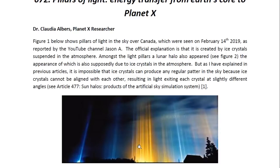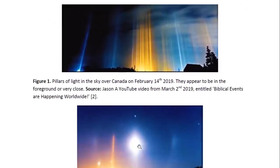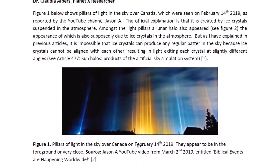Figure one below shows pillars of light in the sky over Canada, which were seen on February 14th, 2019, as reported by the YouTube channel Jason A. The official explanation is that they are created by ice crystals suspended in the atmosphere. Amongst the light pillars, a lunar halo also appeared, the appearance of which is also supposedly due to ice crystals in the atmosphere.